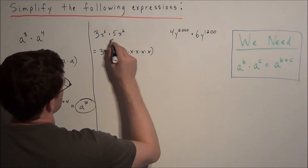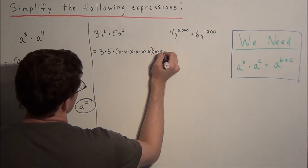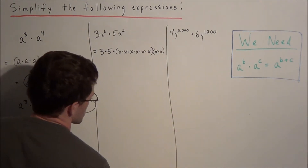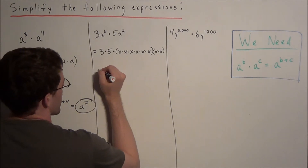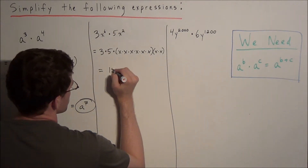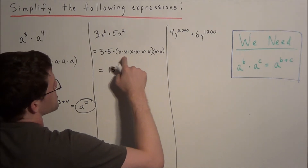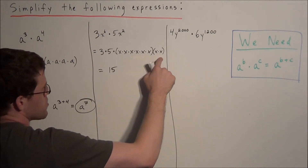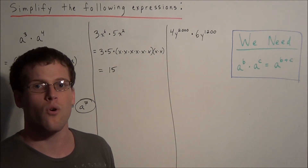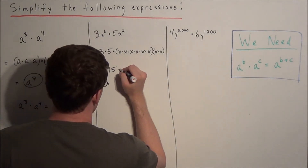Multiplying this by x squared, we would just put another x times x. Simplifying this expression, three times five is fifteen, and a string of six x's followed by a string of two x's gives us a string of eight x's all attached by multiplication, so we have 15x to the eighth power.